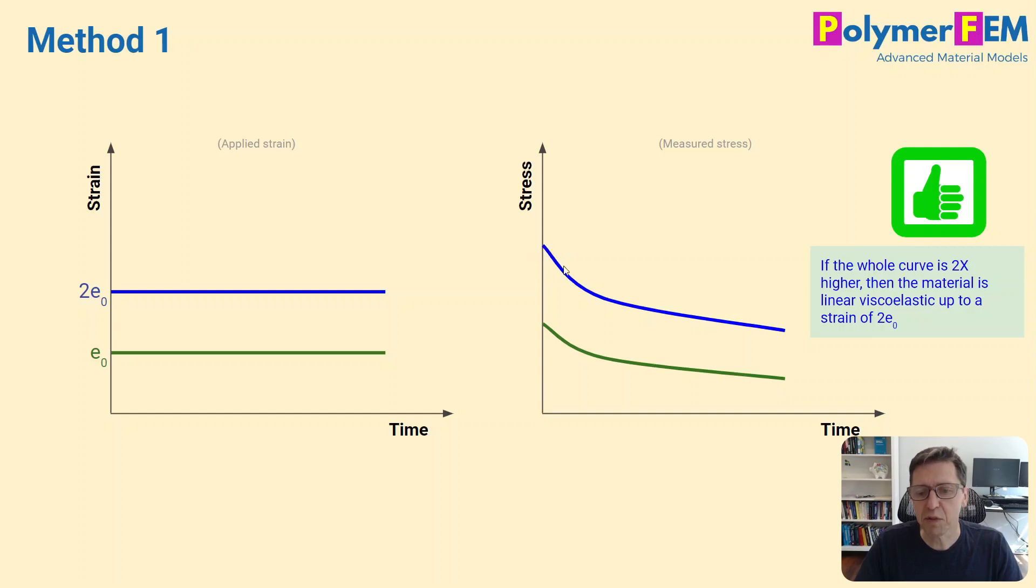not only initially, but for every time afterwards. If the whole stress curve doubles when we double the strain, then the material will be linear viscoelastic in its response. So that's a quick test you can do in a test machine to see if this is the case. You can say in this case that the material is linear viscoelastic up to this strain, to epsilon zero. So that's one way to measure this.